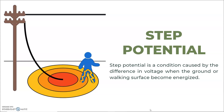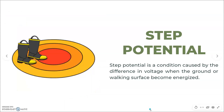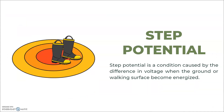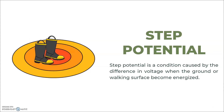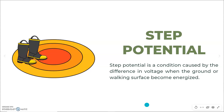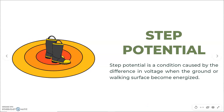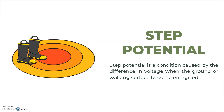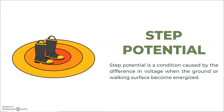If you encounter a downed power line, place your feet together and hop away. Alternatively, you can shuffle your feet one beside the other, touching, and slide your feet along the ground, never letting the heel of the leading foot pass the toe of the other. Do this until you are approximately 33 feet away.